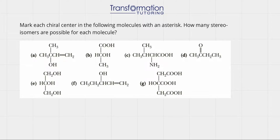Identify each chiral center in the following molecules with an asterisk. How many stereoisomers are possible for each molecule? We're looking for chiral centers, which are atoms that have four different groups — usually carbons. So we're looking for a carbon with four different groups, and if we find one, that means we have a chiral center. Let's take a look at each molecule.